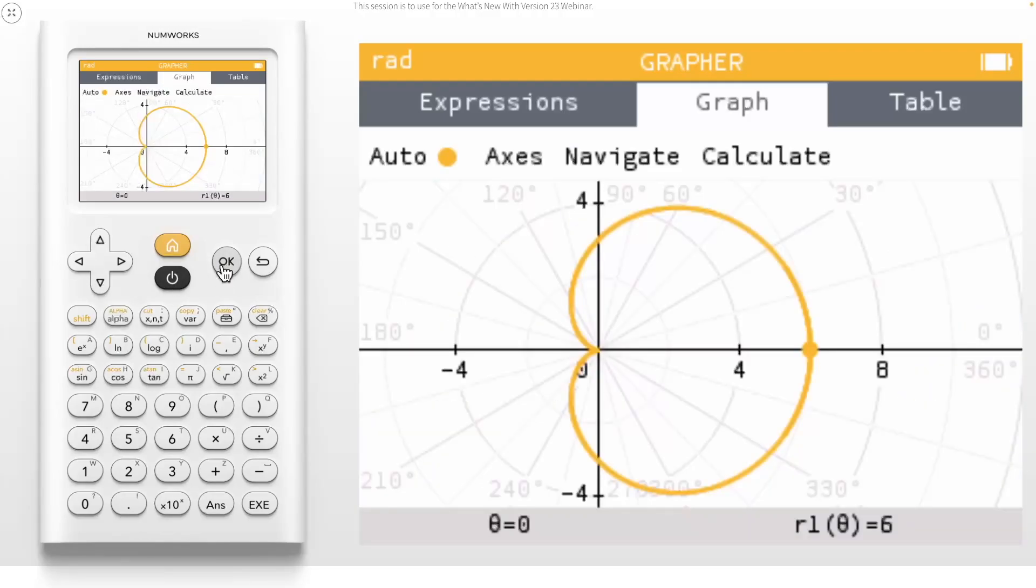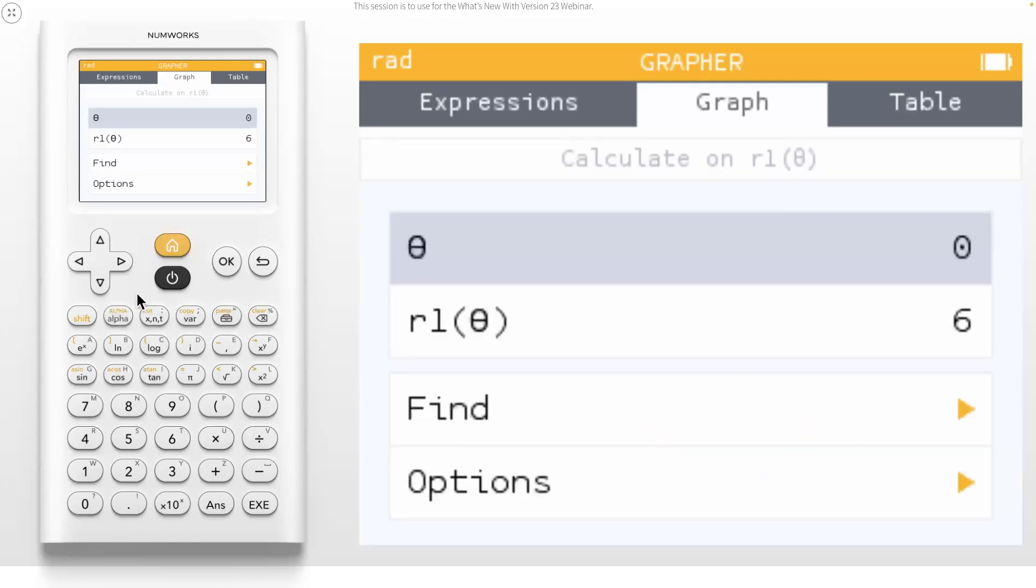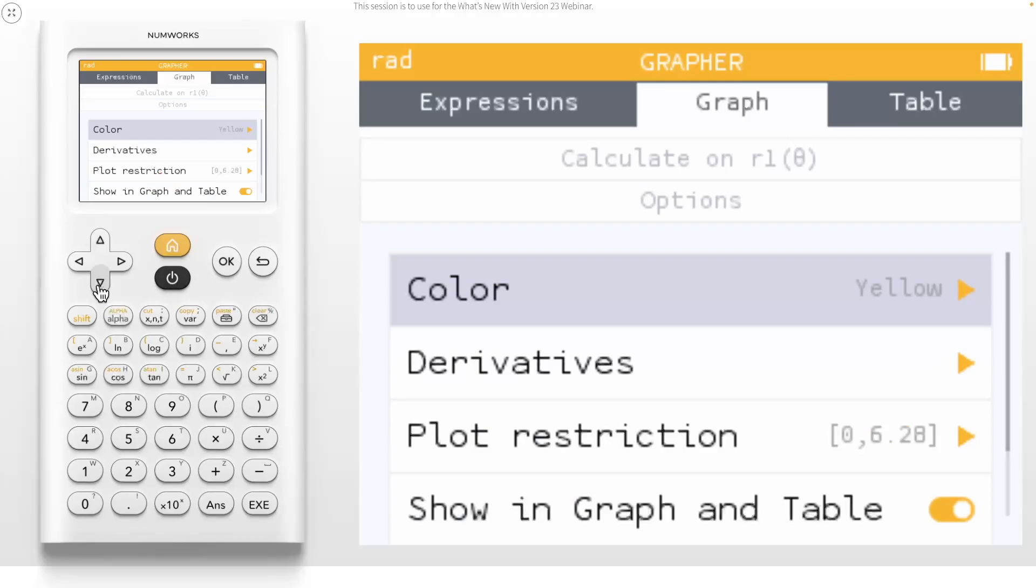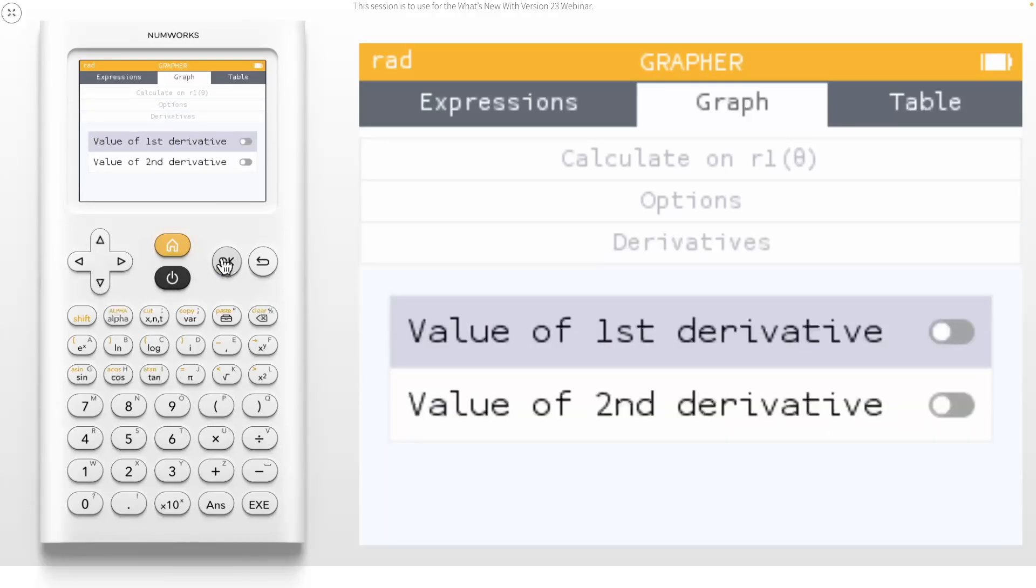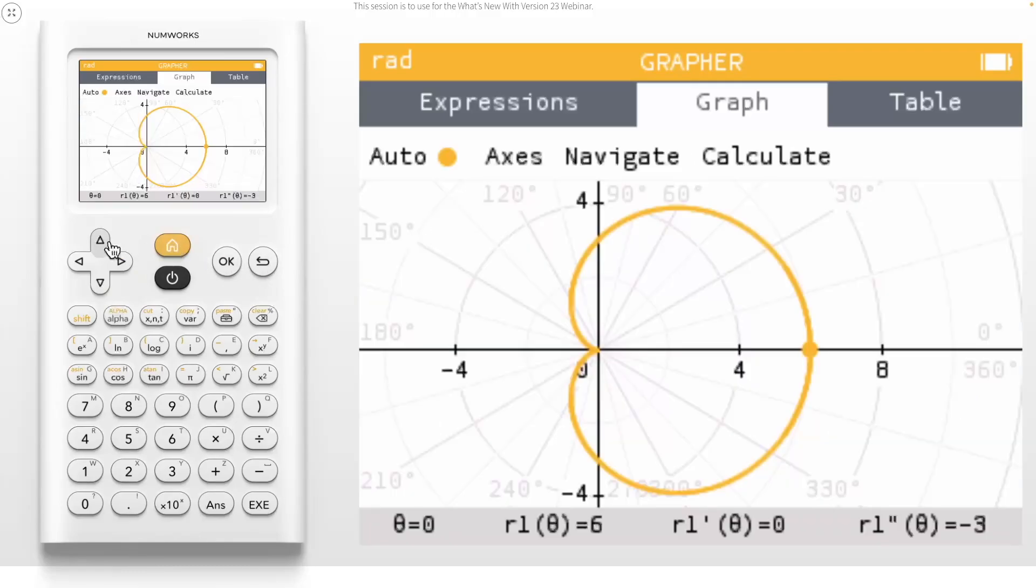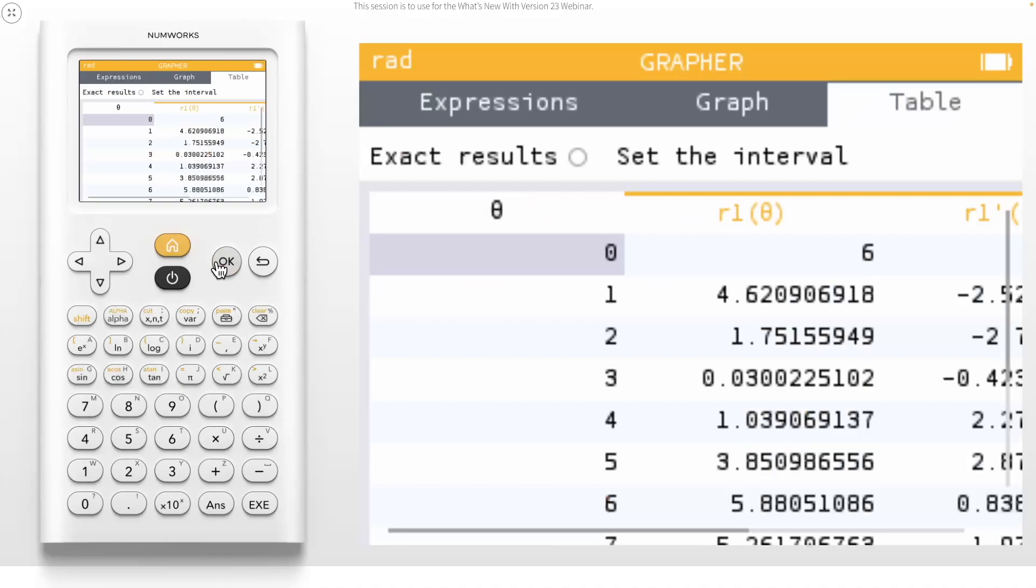We've also added a few new derivative features for polar and parametric functions. Let's press the toolbox key to access the calculate menu and start within the options menu. You will see you have the option to display the value of the first and or second derivative. With these activated, you will add the derivative values in the bottom banner as you dynamically trace the graph. These derivative values are also displayed in the table.